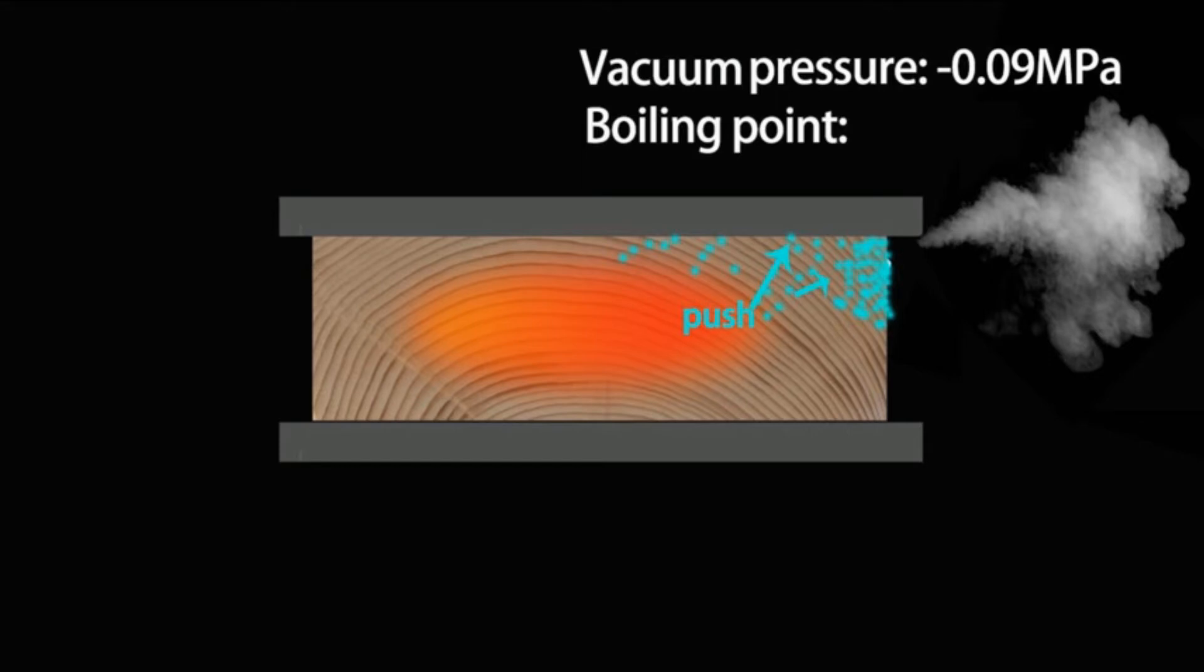Another very important technology is vacuum pressure, or minus pressure. We know that if we lower the pressure, the water boiling point will be lower. For example, if we get the pressure to minus 0.09 MPa, the boiling point of water will be 48 degrees.